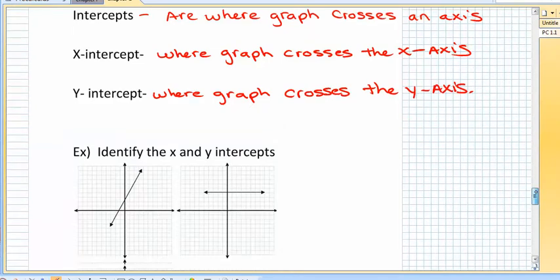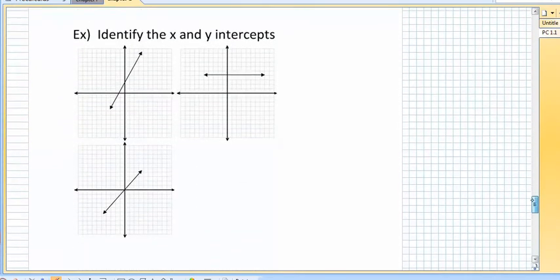So in this picture, it says to identify the x and y intercepts. Well, if you notice, here's the y-intercept and here's the x-intercept. So the x-intercept is negative one, zero. And the y-intercept would be zero, two.